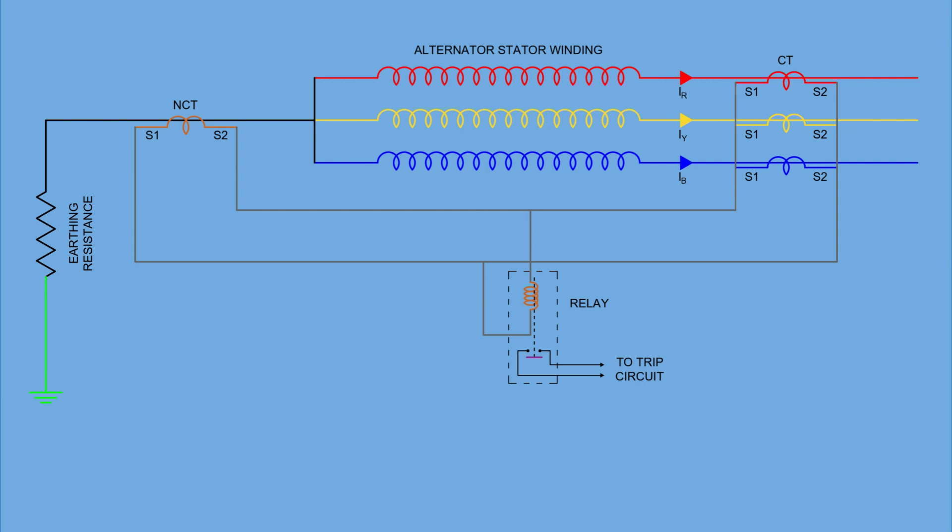Let's now talk about how the system behaves under normal operating conditions. When everything's working fine, the currents flowing in the alternator leads, that is, in the R, Y, and B phase conductors, are perfectly balanced. That means, in the secondaries of the CTs, their vector sum is zero, and no current flows through the relay. Also, under these conditions, the current in the neutral wire is zero, so the CT in the neutral conductor also doesn't supply any current to the relay. Hence, the relay remains inactive.